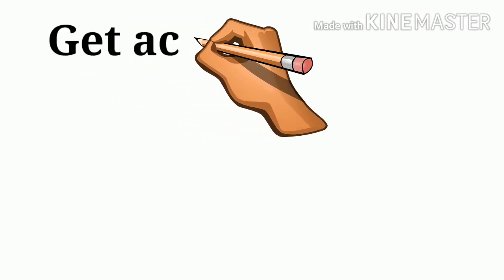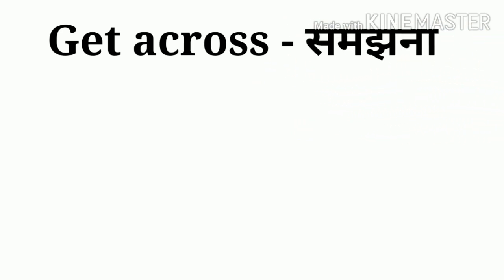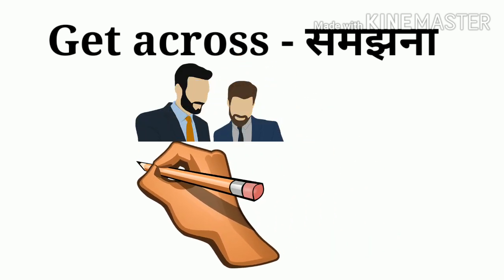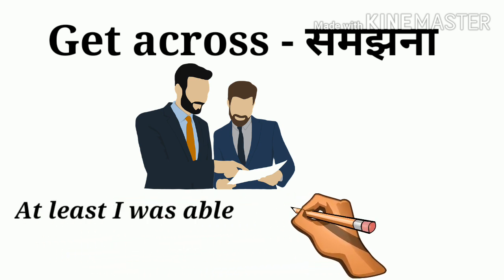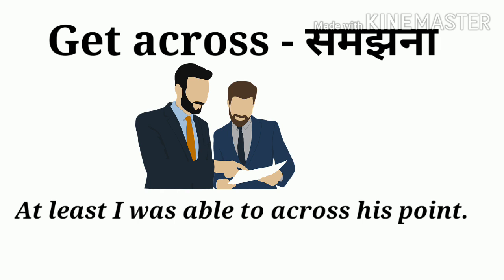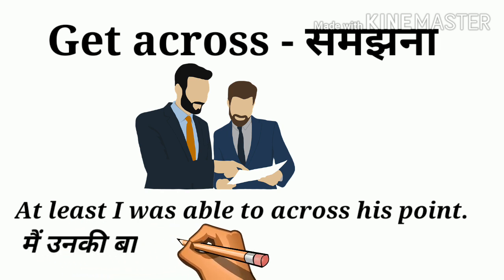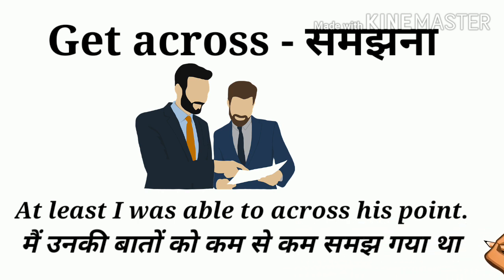Next: 'get across.' Get across means to communicate or make someone understand. For example, my friend, I am trying to say something but I have not been able to make the words understood. After that, I have understood the words. At least I was able to get across his point — I understood his words at least.